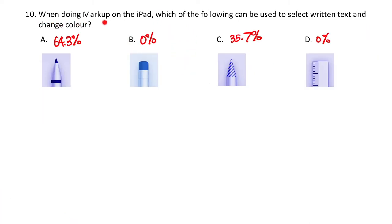When doing markup on the iPad, which of the following can be used to select written text and change color? We can see that over 60% of the students chose A as the answer. However, the correct answer should be C. This is because the main point of the question is how to select written text, not to write written text.